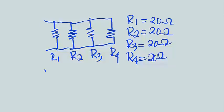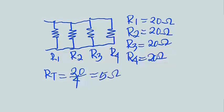Using the formula, RT is equal to 20 over 4. The value 20 is the value of resistors R1, R2, R3, and R4, which all have the same value. The number 4 is the number of resistors. 20 divided by 4 equals 5 ohms. That is the total resistance of 4 resistors connected in parallel, each having a value of 20 ohms.